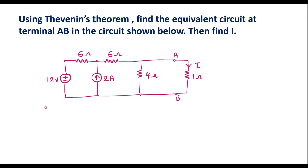In this video, let me consider one numerical on Thevenin's theorem. Using Thevenin's theorem, find the equivalent circuit at terminal AB in the circuit shown below, then find I. Here we are supposed to find the Thevenin's equivalent circuit at terminals A and B, then find the current I, which is the current flowing through the 1Ω resistor.